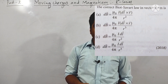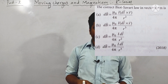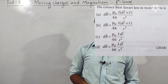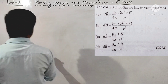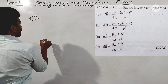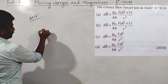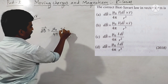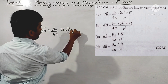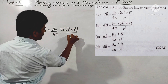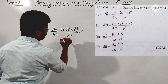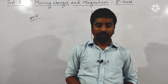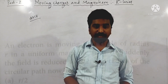Hello students, we move on to the next question paper, 2018. The first question: the correct Biot-Savart law in vector form. The vector form of Biot-Savart law is given by dB equals mu naught divided by 4 pi, times i into dl cross r hat divided by r squared, or equivalently i dl cross r divided by r cubed. This is the correct Biot-Savart law in vector form.